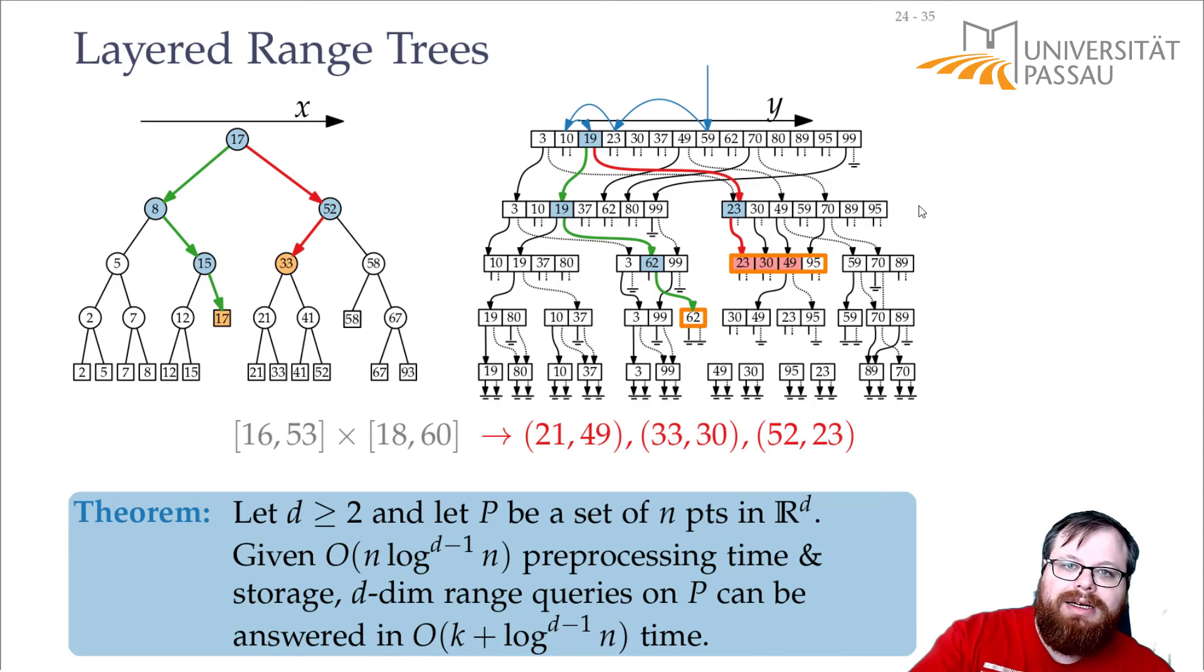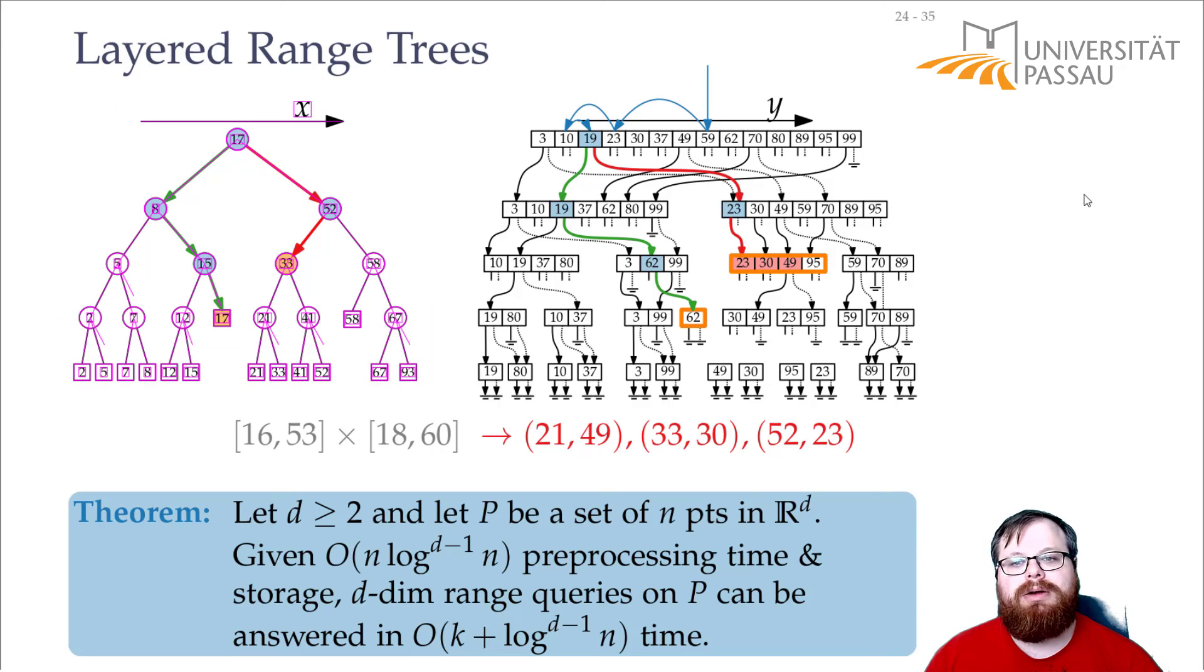And this, then immediately generalizes to larger dimensions. Because we can do two dimensions in k plus log n. That means we can do three dimensions with another log factor, k plus log squared n. So, we can do d dimensions in k plus log to the d minus 1 n time. So, this small trick of not doing a binary search again, but using all these pointers, that, of course, take some more space. But, it's fine, because the space storage still is exactly the same as before. It doesn't increase asymptotically. That gives us, that shaves off one log factor of the running time.